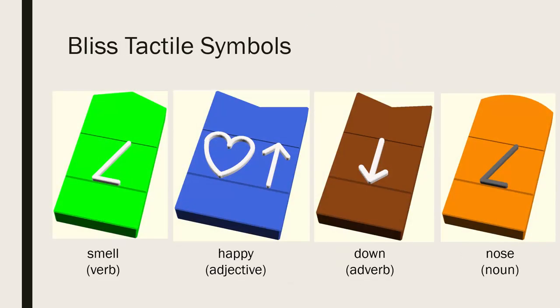Our 3D printed Bliss tactile symbols reflect the two types of indicators in the top edge of the symbol. Verbs have an action indicator-like top. Adjectives and adverbs have an evaluation indicator-like top. Nouns, on the other hand, have a rounded top edge.